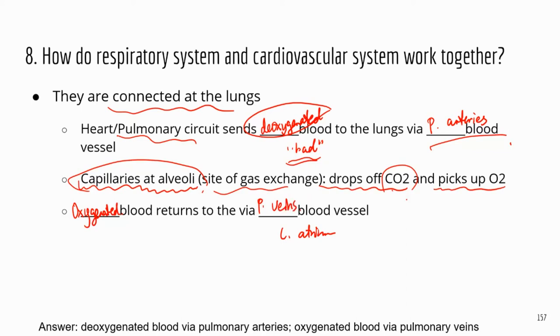The veins are blood vessels that bring blood toward the heart — they return blood back to the heart. And in the case of pulmonary veins, they do carry oxygenated blood.